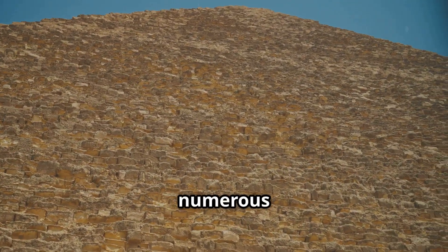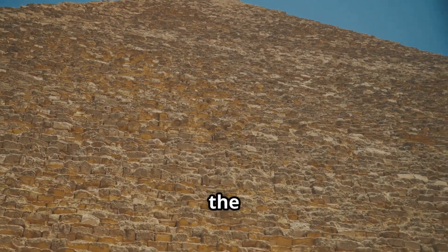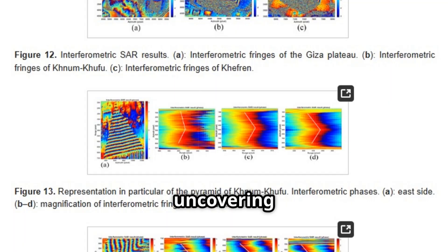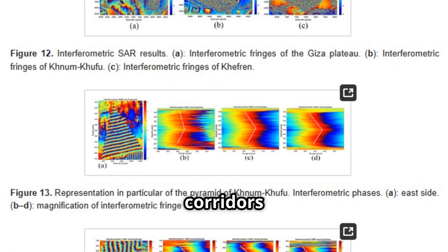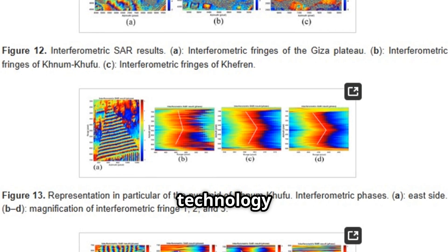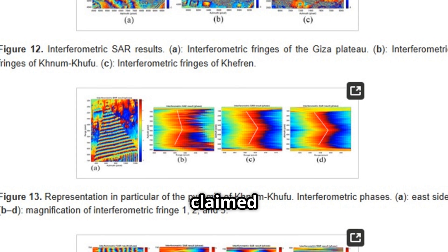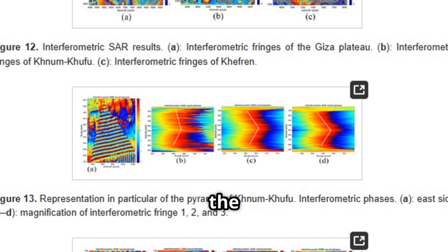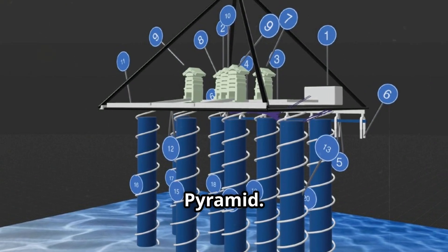Their research revealed numerous internal structures within the first pyramid of the Giza Plateau, uncovering the presence of rooms and corridors both above and below ground level. They used the same technology and techniques for the discovery they claimed last week about discovering massive structures under the middle pyramid known as the Khafra pyramid.